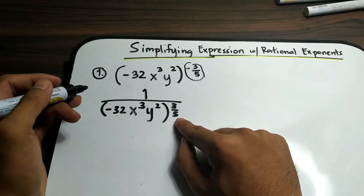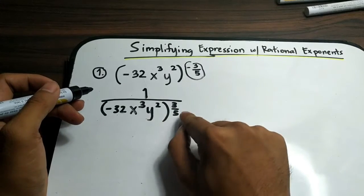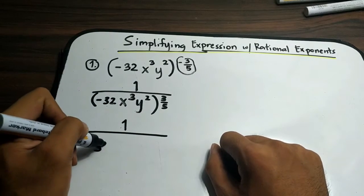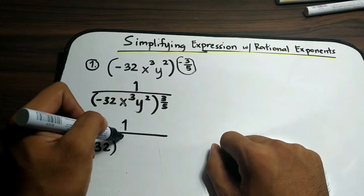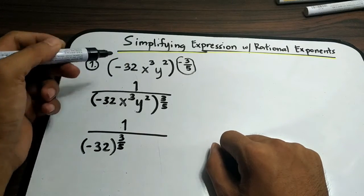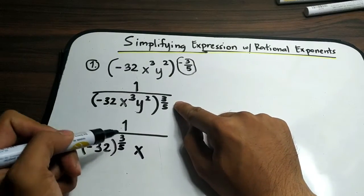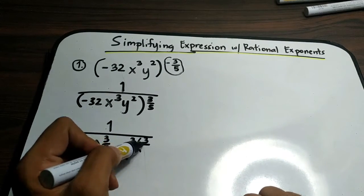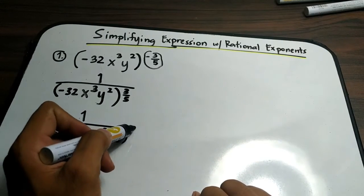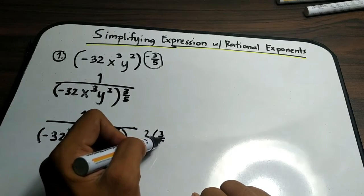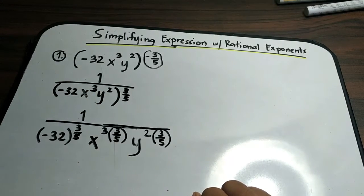After that, you can simplify the expression by multiplying the exponents. We have 1 over negative 32 raised to 3 over 5. We multiply 3 over 5 by the exponent of 32. Next, we multiply 3 over 5 by the exponent of variable x, so we have 3 times 3 over 5. Then for variable y, we have y raised to 2 times 3 over 5.